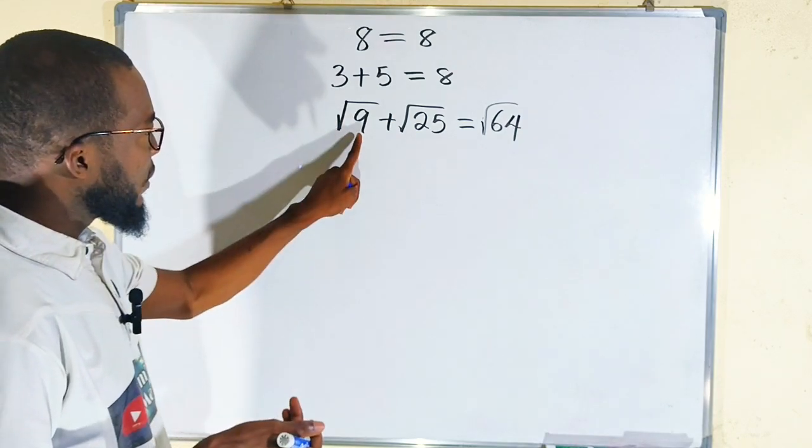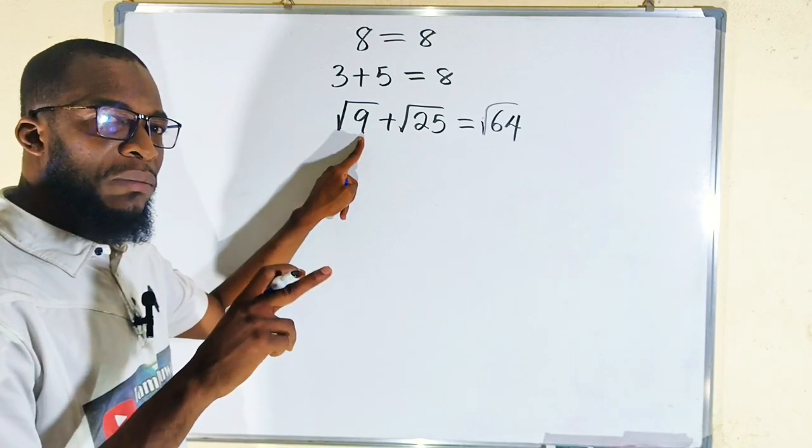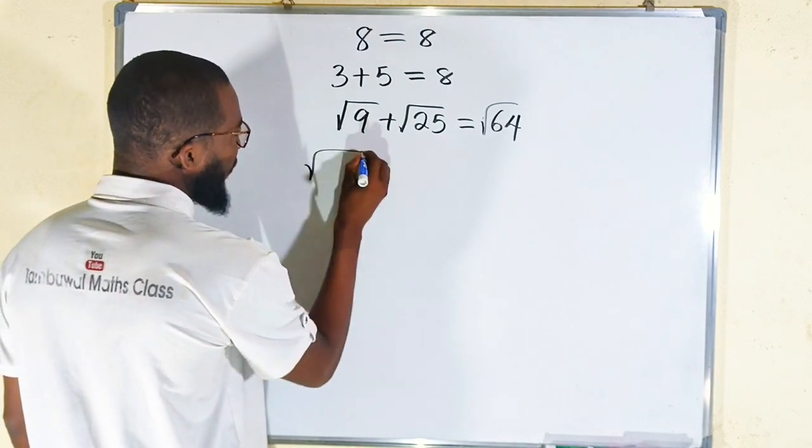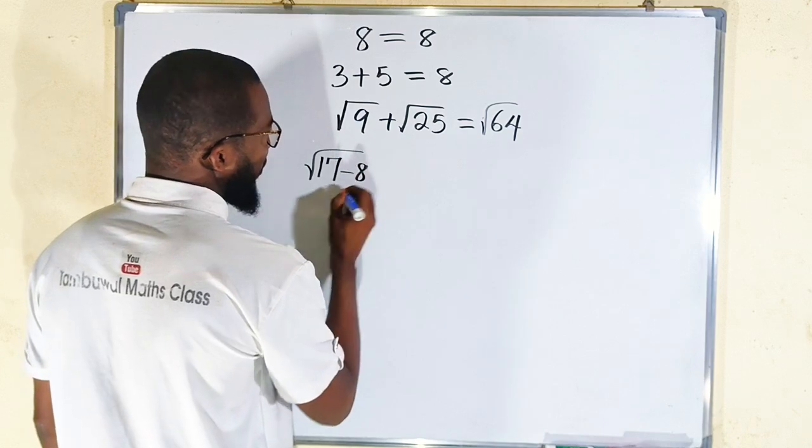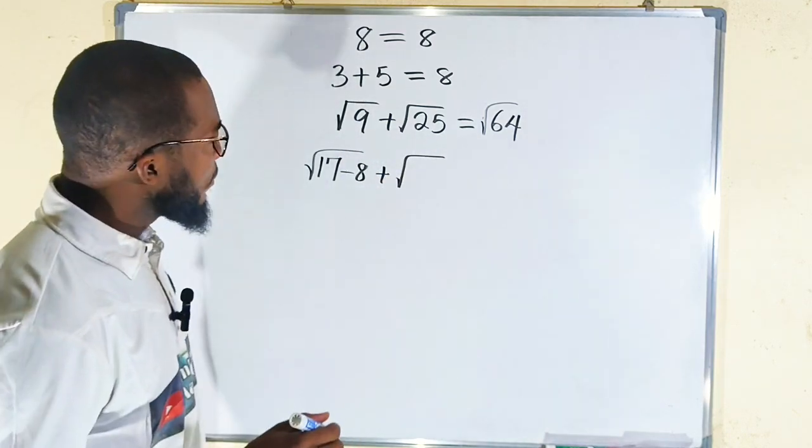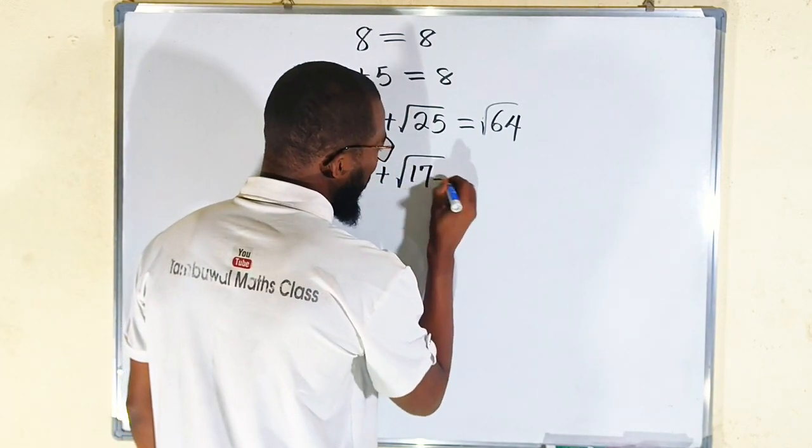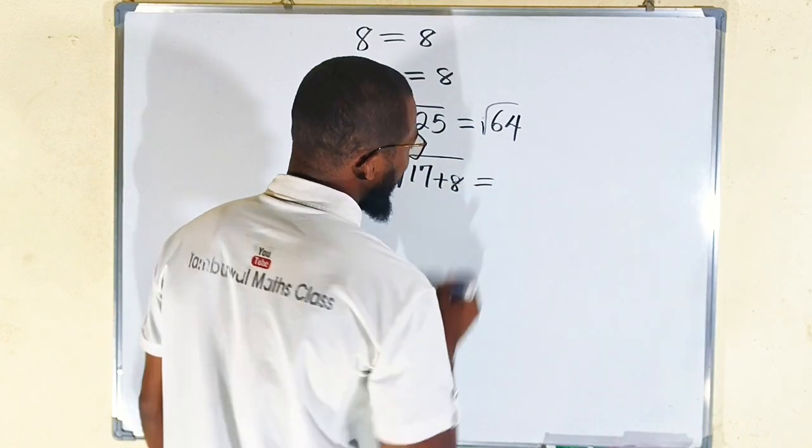I know that 9 can be expressed as 17 minus 8, so I can write this one confidently as square root of 17 minus 8 plus... 17 plus 8 is 25, so we have square root of 17 plus 8. This is equal to...